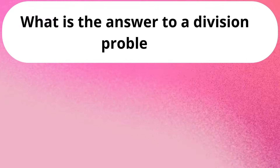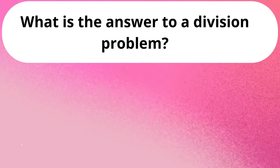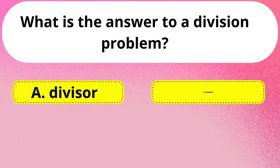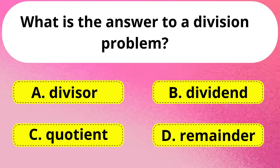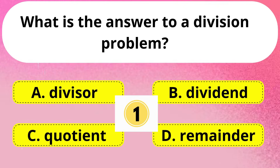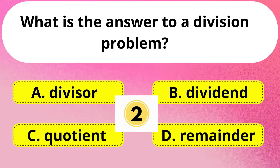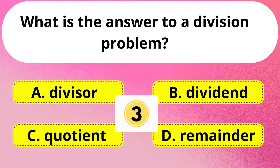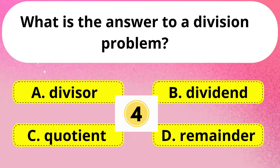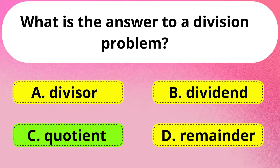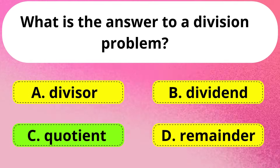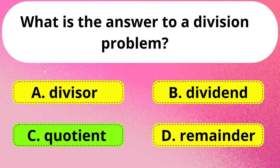Question No. 1. What is the answer to a division problem? Divisor, dividend, quotient, or remainder? Right answer is Option C: Quotient.